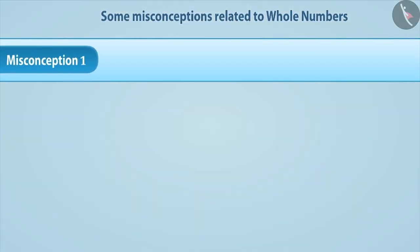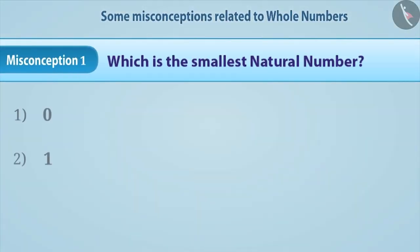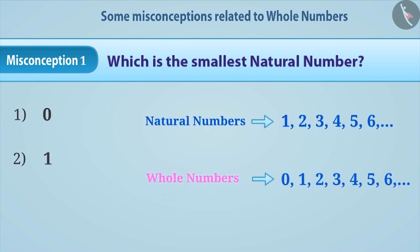Misconception 1: Which is the smallest natural number? When the concepts of natural numbers and whole numbers are not clear, often 0 is considered as the smallest natural number.